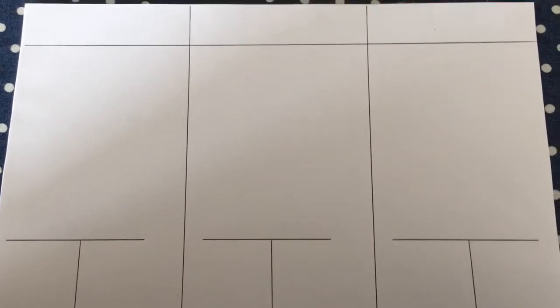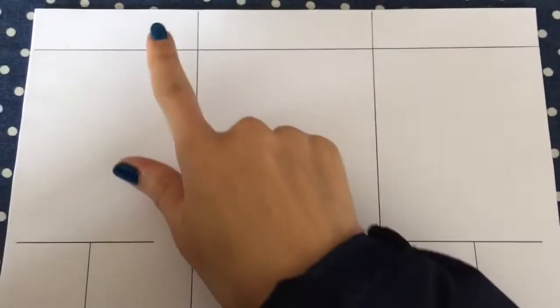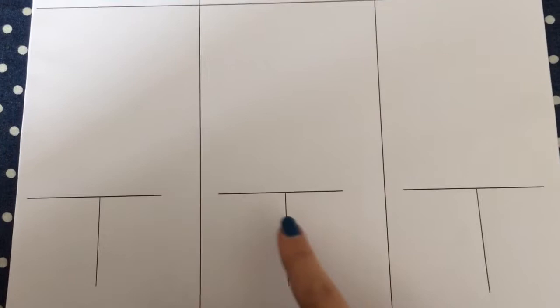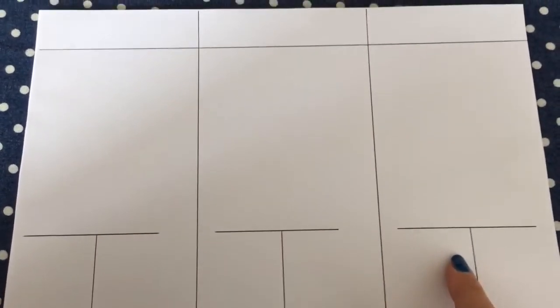So I start with my page, and you can actually go and draw this out at home. Landscape, and then I divide it into three columns. You'll see I'm going to write my headings over there, and then I've got a little T that I've drawn at the bottom of all three columns.